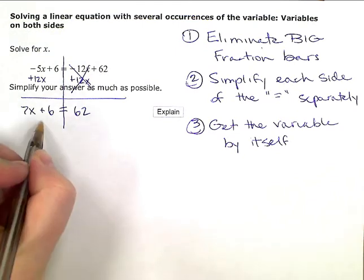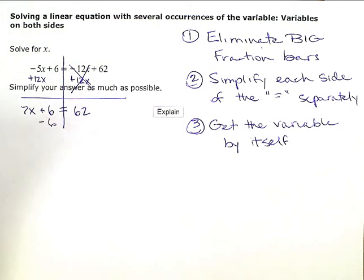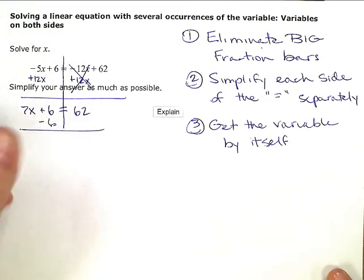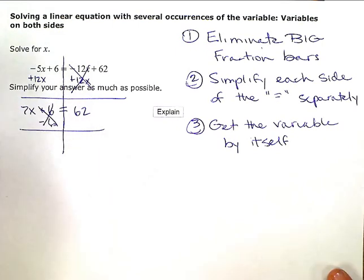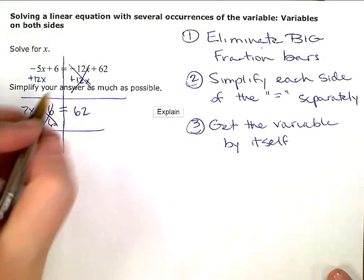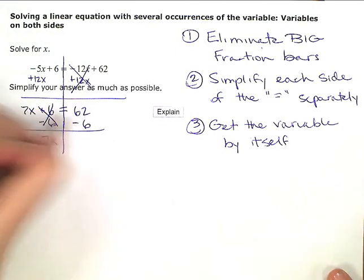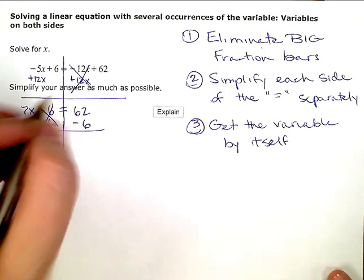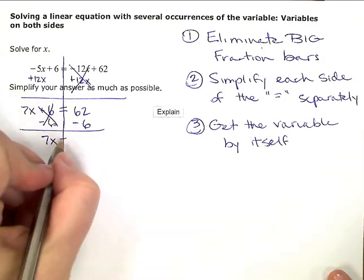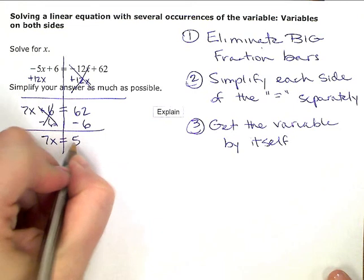So the next thing I'm going to do is zero out or eliminate that plus 6 by subtracting 6. And again, that'll zero that out or eliminate it from the left side, leaving me with just 7x, but to keep my equation balanced, I also have to subtract 6 on the right. And 62 minus 6 is 56.